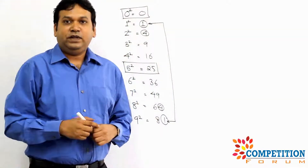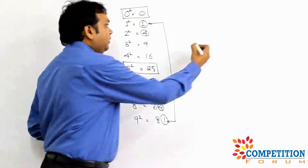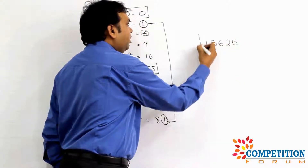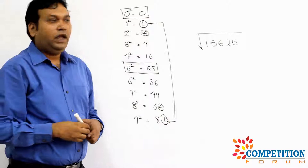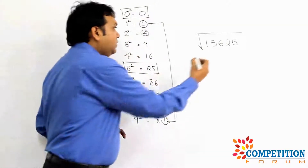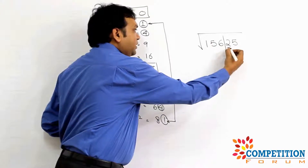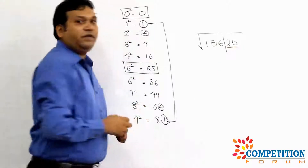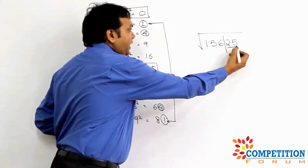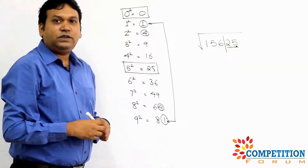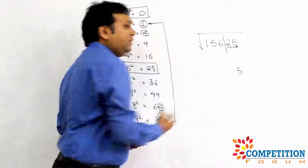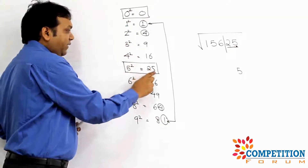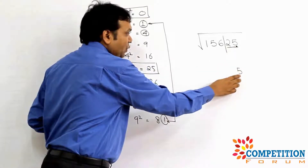Let's take our first example: find the square root of 15625. The first thing to do is split the rightmost two digits, which are 2 and 5. The last digit, 5, helps us determine the last digit of the square root — and since only 5² ends in 5, the square root ends in 5.